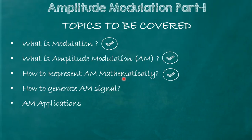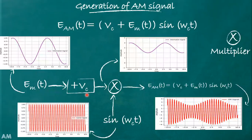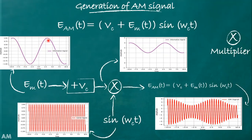Now let us move to how to generate the AM signal. The equation is eAM(t) = [Vc + em(t)]·sin(ωc·t). To generate the AM signal, let us first generate the bracket term [Vc + em(t)]. Here em(t) is the information signal — let us consider it as a sinusoidal wave having a peak value of one, oscillating about zero.